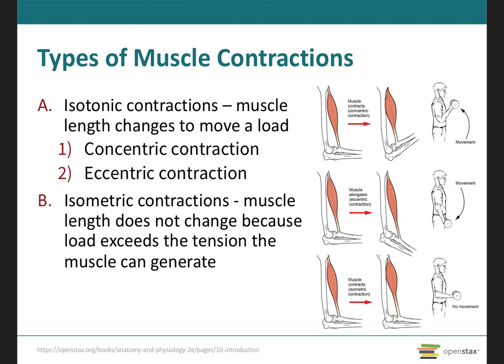The two types of isotonic contractions are the concentric and the eccentric. In a concentric isotonic contraction, the tension generated is great enough to exceed the load, and the muscle will then shorten, pulling on another structure such as a tendon to produce movement. For example, if you're lifting up a weight, this involves concentric isotonic contractions of the biceps brachii muscle in the arm.